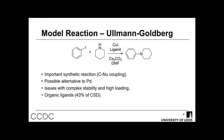Throughout this talk, I'm going to use the Ullmann-Goldberg reaction as a model reaction. This is quite an important synthetic reaction — a carbon nucleophile coupling reaction and a possible palladium alternative, similar to the Buchwald-Hartwig transformation. It isn't widely used in industry currently because of issues with complex stability and the need for high catalyst loadings. However, it's attractive because the ligands used are organic, and 43% of the CSD is made up of organic compounds, providing a large dataset for finding new potential ligands.